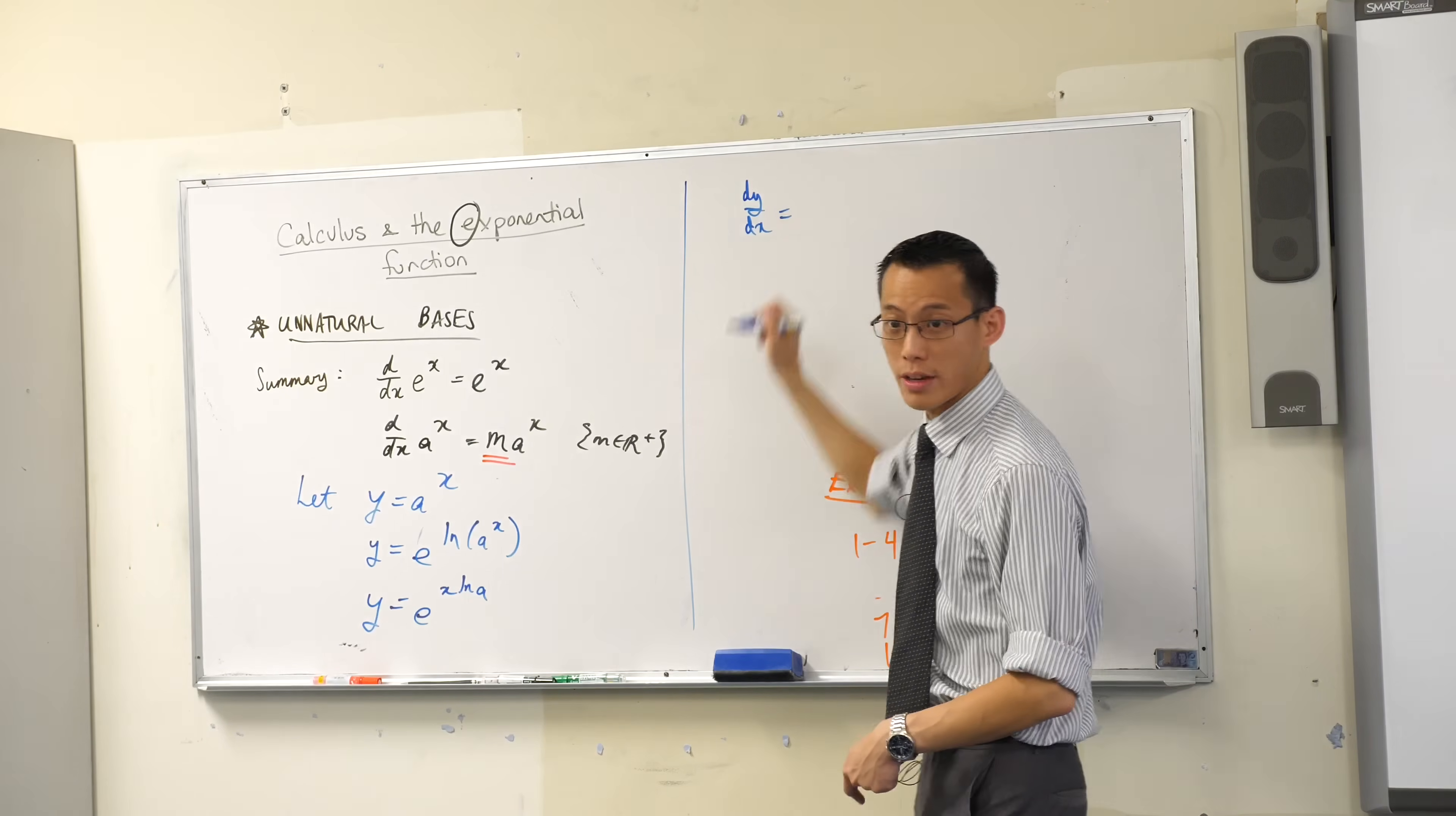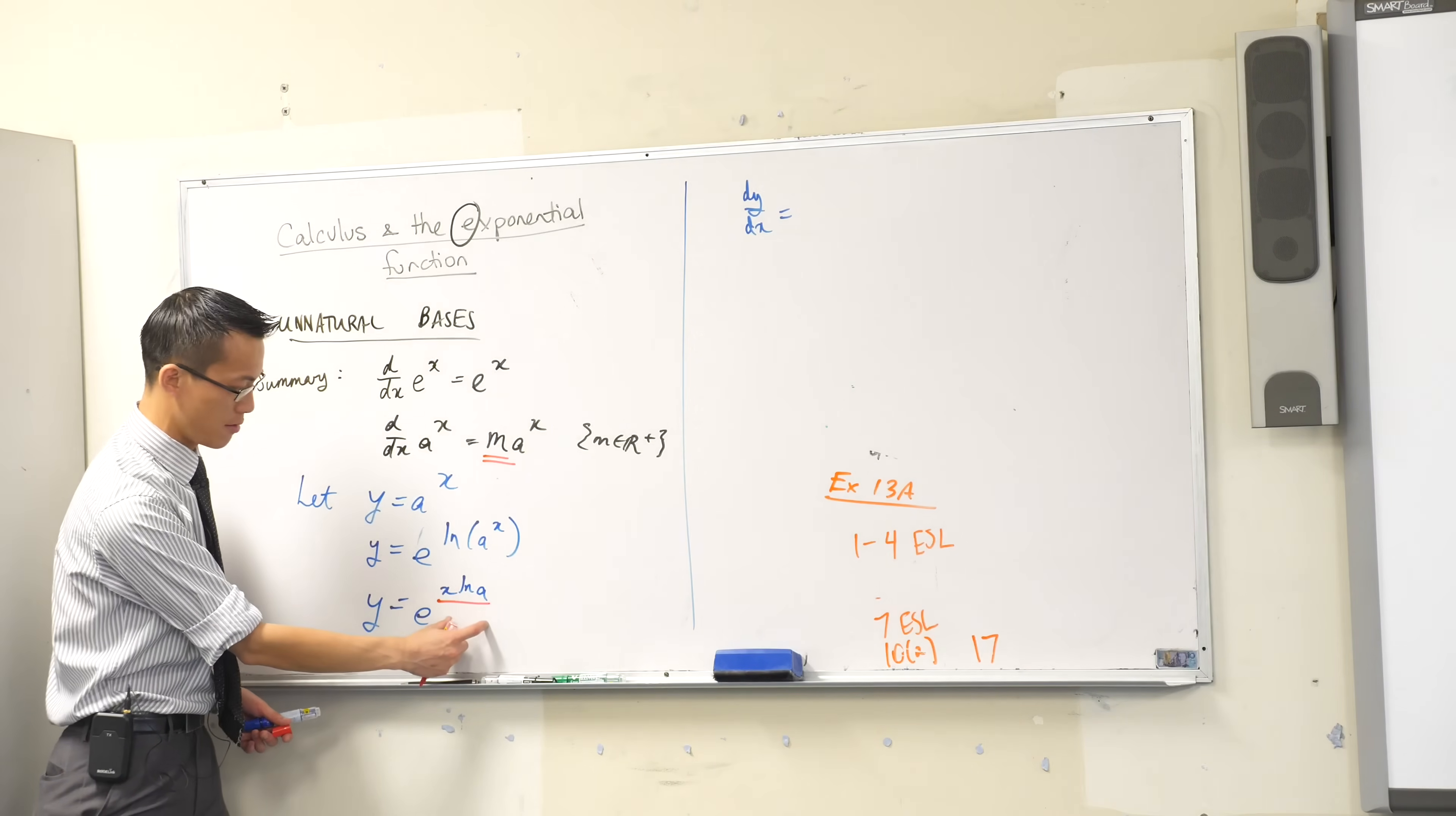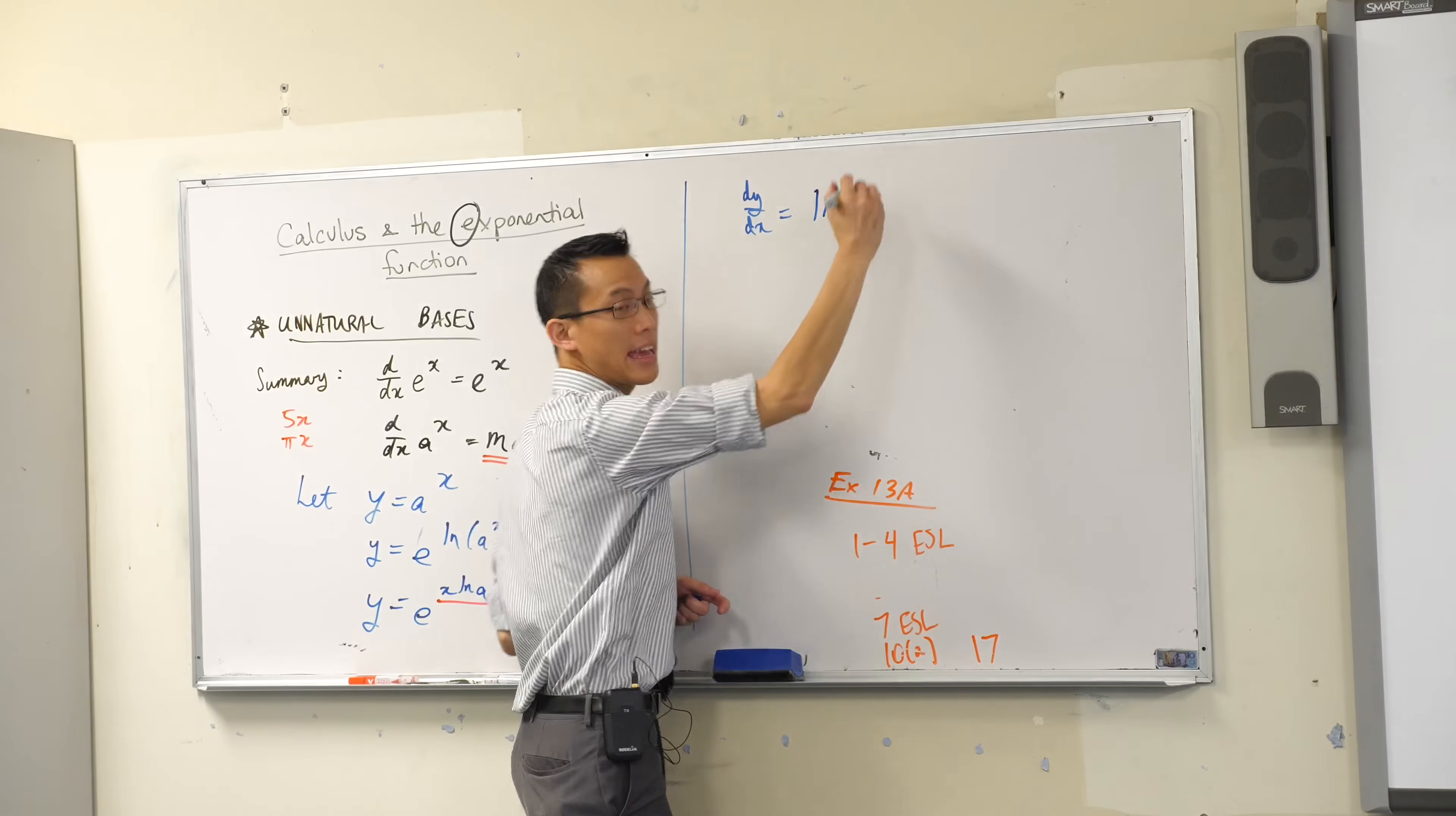Okay, what's the inside function? It's x log a. But don't forget, a is just a number like 2 or 1.5 or 10, whatever you put into Desmos. So if a is just a number, then the log of a is also just a number. So what's the inside derivative? If the inside function was 5x, you'd say the inside derivative is 5. If the inside function was pi x, you'd say the inside derivative was pi. Well, this is just log a times x, just like this. So the inside derivative is just log a.